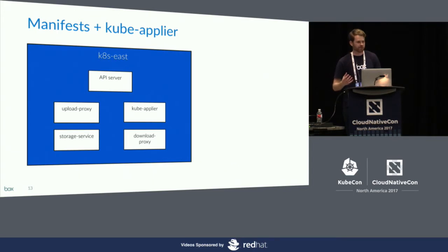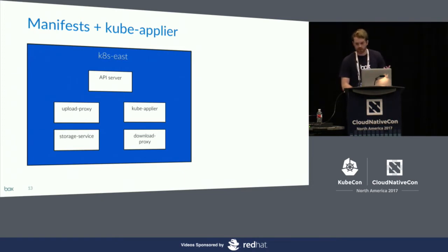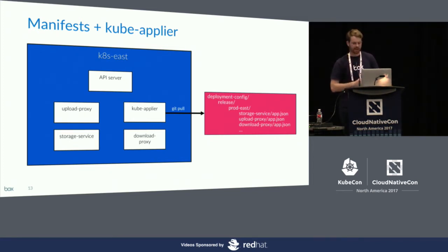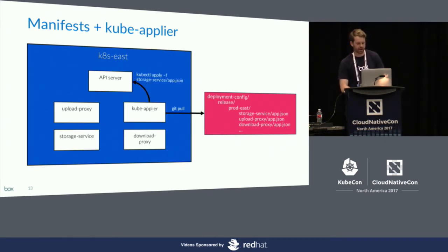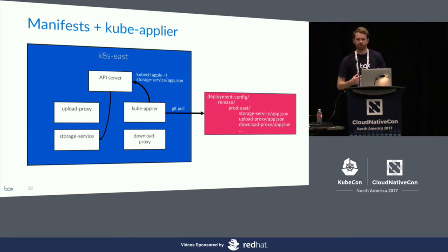Now that we've modified our manifests, we want them to reflect the actual state on the cluster — that's what CubeApplyer does. CubeApplyer runs on our cluster like any other service alongside the API server, storage service, UploadProxy, and DownloadProxy. Each service is defined by a declarative app manifest under deployment-config. CubeApplyer continuously polls that repo for changes, and if it sees that a file has changed — for example, storage service now has a new image tag — it runs a kubectl apply command to the API server. kubectl apply is the declarative operator that says here's what I want my object to look like, and the API server handles making it a reality.